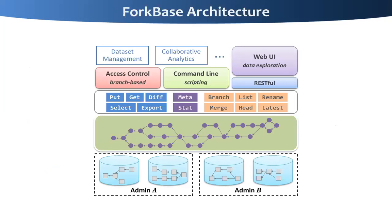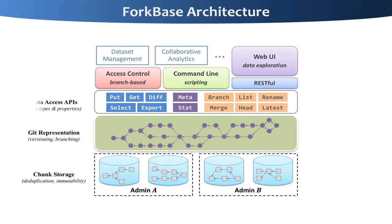With the technology above, we implement 4Base as shown in the architecture. In the underlying layer is the chunk storage, which uses the POST tree to provide deduplication and immutability. 4Base is a distributed system with a shared-nothing design. On top of that is the Git representation to provide versioning and branch management. We then provide a rich set of 4Base APIs to support different kinds of data types, including primitives such as string, integer, and boolean, as well as chunkable types such as the collection types of set, map, and list. We also provide semantic layers on top for building applications.